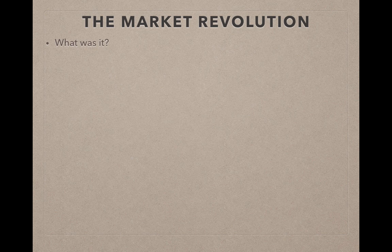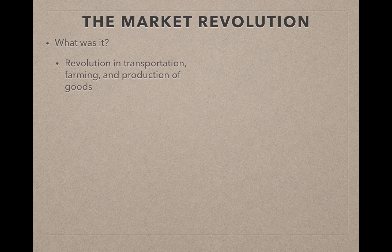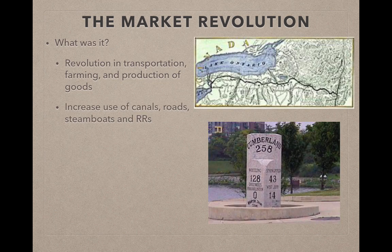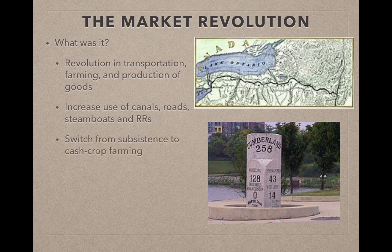The market revolution was a revolution in transportation, farming, and production of goods. We also have an increased use of canals such as the Erie Canal, which connects Albany to Buffalo. Roads such as the National Road or Cumberland Road. And then steamboats and railroads, which are becoming popular during this time too. And we have a switch from subsistence to cash crop farming.